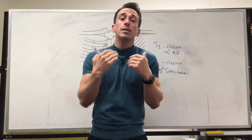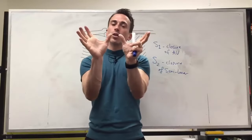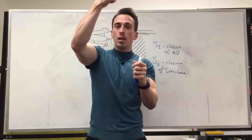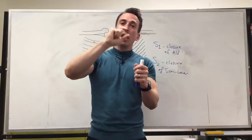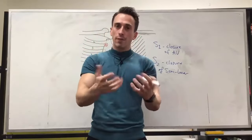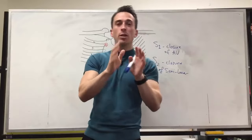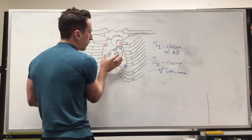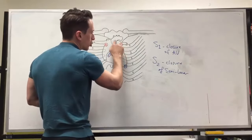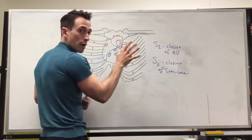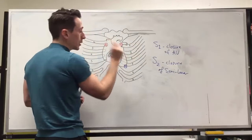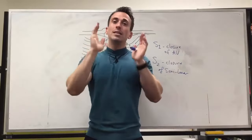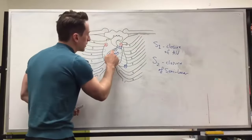We also need to talk about the semilunar valves. When the right ventricle contracts, it pushes blood out to the lungs via the pulmonary artery, and the pulmonary trunk has a valve called the pulmonary semilunar valve. When that right ventricle contracts, it pushes blood up through the pulmonary semilunar valve to the pulmonary arteries. On the left-hand side, when blood goes from the left ventricle out through the aorta, it must pass through the aortic semilunar valve.